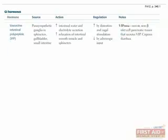Vasoactive intestinal polypeptide, or VIP, is released from the parasympathetic ganglia in sphincters, the gallbladder, and the small intestine. It's responsible for increasing intestinal water and electrolyte secretion and relaxing intestinal smooth muscle in sphincters. This function of increasing fluid secretion can be a source of pathology in a VIPoma, which presents with copious diarrhea. VIP in the normal state is increased by distension or vagal stimulation and decreased by adrenergic input.